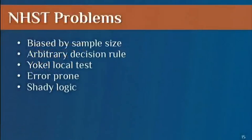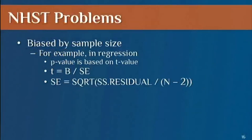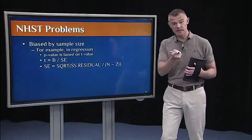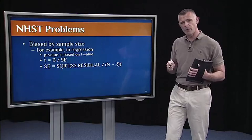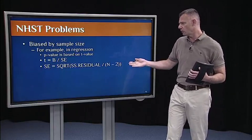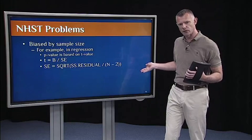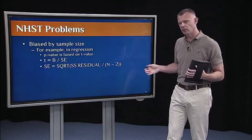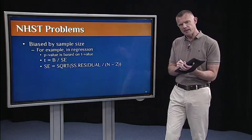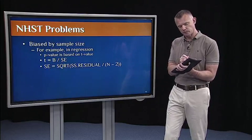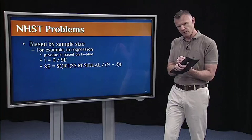The first problem is that it's biased by sample size. So, we've already seen this in action, if you looked at your R output and your P values as they relate to sample size. So, for example, in regression, the P value that you get in your R output is based on the T value that's calculated. And the T value in regression is the unstandardized regression coefficient, B, divided by standard error. Where standard error is the square root of the sum to squares residual divided by sample size minus 2. And we went through these calculations as we talked about. The important thing to notice here is N is in the denominator of the standard error equation.